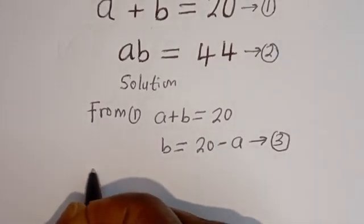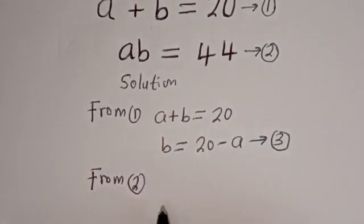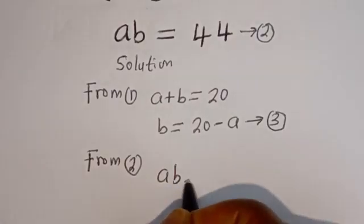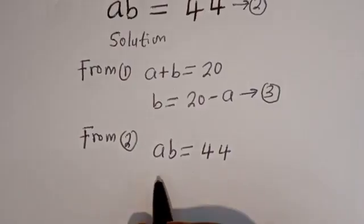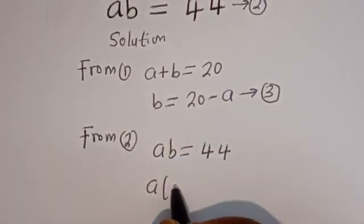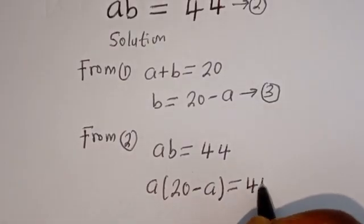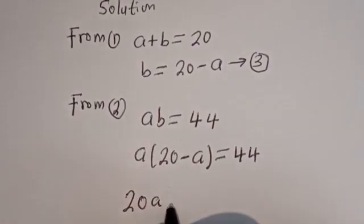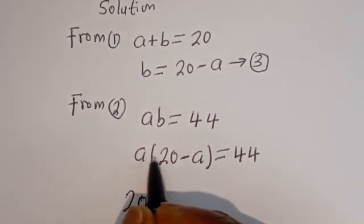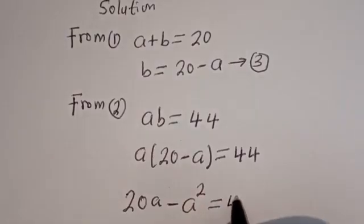Then from equation 2, that is A times B is equal to 44, we can substitute for B. So A times (20 minus A) is equal to 44. Let's open the bracket: A multiplied by 20 is 20A, and A multiplied by minus A is minus A squared, equal to 44.